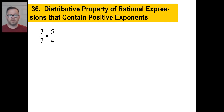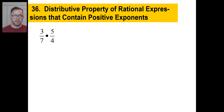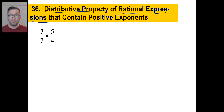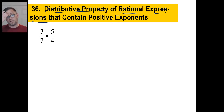Hey guys, let's take a look at this monstrously long title: Distributive Property of Rational Expressions that Contain Positive Exponents. Let's break it down. Distributive property — you just distribute and multiply. A rational expression is just a bunch of terms, X's and numbers and constants. Rational means you can express it as a fraction, like three-fourths or one-eighth. Positive exponents — that's pretty self-explanatory. When you break this up into chunks, it's a lot easier to handle.